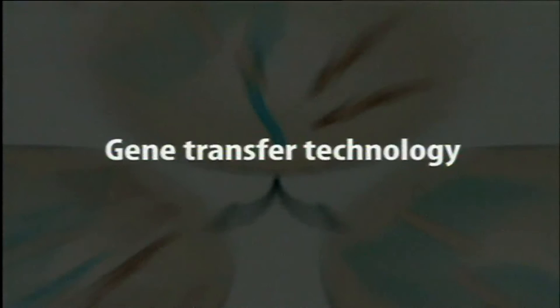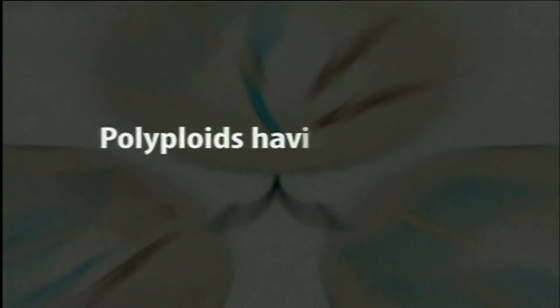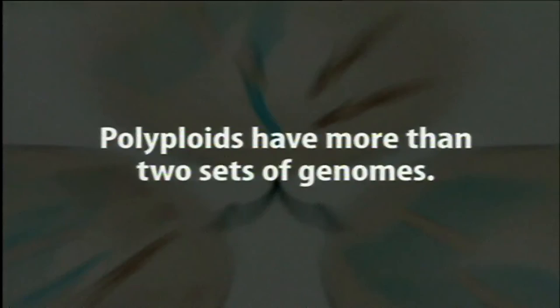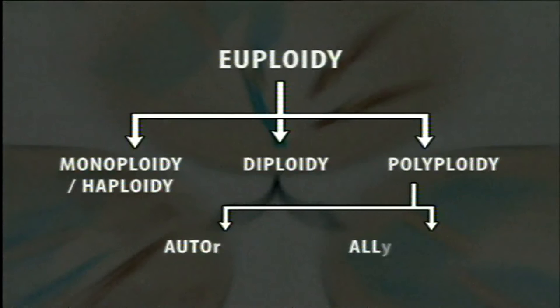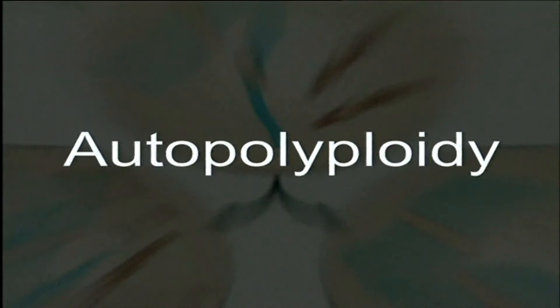Polyploidy is a condition where more than two sets of chromosomes are involved. Since euploidy involves whole sets of chromosomes, polyploids are basically of two types: allopolyploidy and autopolyploidy. Autopolyploidy is a condition where the same basic set of chromosomes is multiplied — that is, the whole chromosomal set of a plant or animal is multiplied more than twice. Polyploidy is more common in plants than animals because plants have a greater tolerance for having more chromosomes in their nucleus.